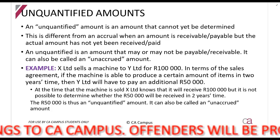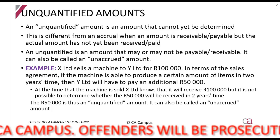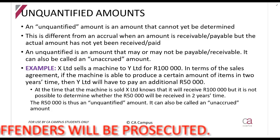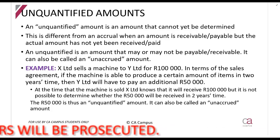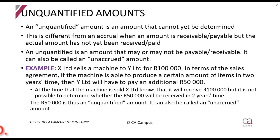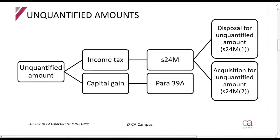Let's look at an example. X Limited sells a machine to Y Limited for R100,000. In terms of the sales agreement, if the machine is able to produce a certain number of items within two years, Y Limited will have to pay an additional R50,000. So the question is: is that R50,000 going to be payable? In year one when we sell it, we don't know — so that R50,000 is an unquantified amount. We'll only know when the machine has produced the required items, or in two years when the deal expires.